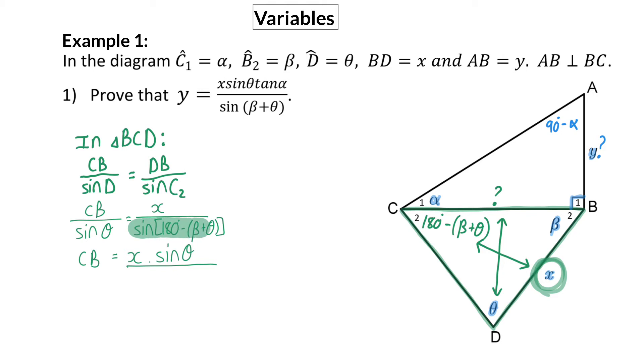For the denominator, it is now also important to remember your reduction formulas. In the denominator, we have sin of 180 minus an angle. 180 minus is in the second quadrant, and that is where sin is positive. Therefore, we can say that it is the same as sin of the acute angle, which in this case is beta plus theta. And even though this is not a pretty answer, this is a value for side CB.